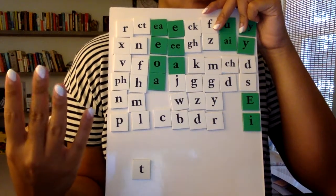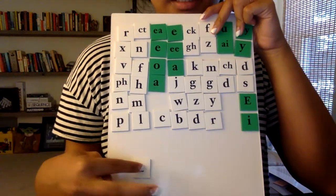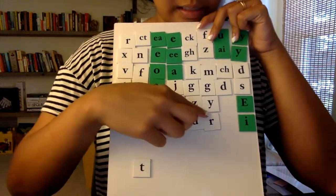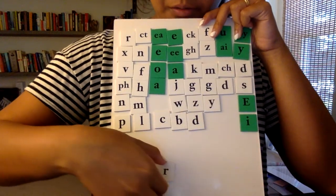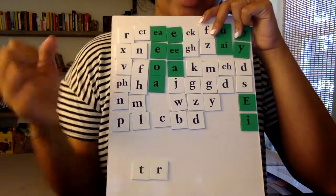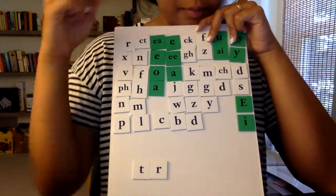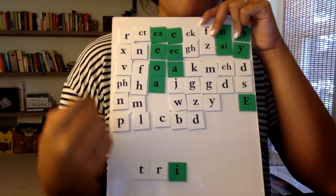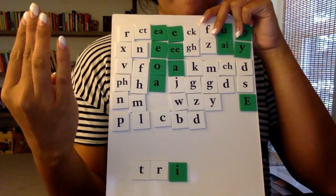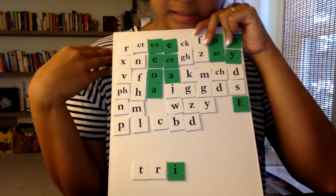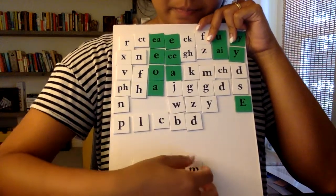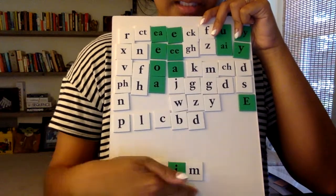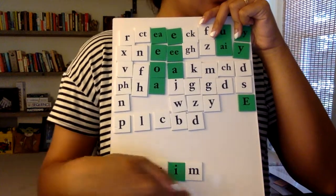Trim: T, R, I, M. We have T. Next is R, which I know the R says R. Then I is what I hear, so I'm looking for my I. T, R, I, M — that M sound is said by the letter M. So the word is T, R, I, M. Just like we did with our fingers. Let's blend it together — 'trim'. The word is trim.